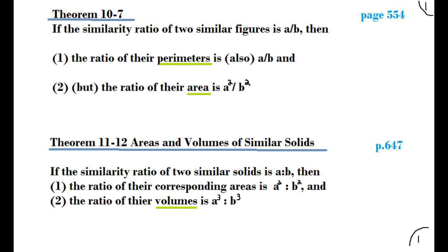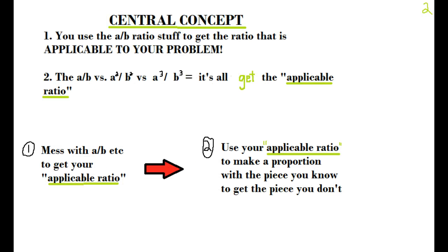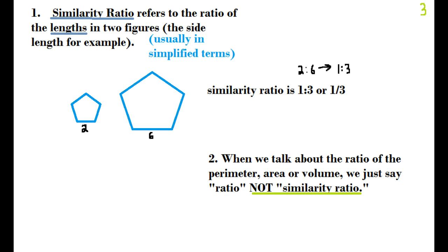To do any of these problems, think of it in two steps. Step one: work with your a to b ratio to get the applicable ratio — whether that's a to b, a² to b², or a³ to b³ — depending on your problem. Step two: use that applicable ratio to set up a proportion, just like you've always done.